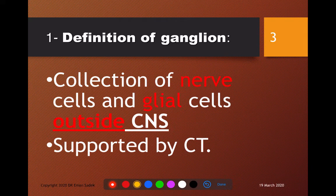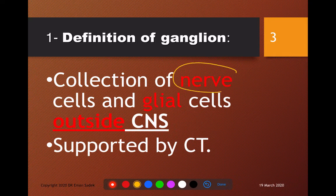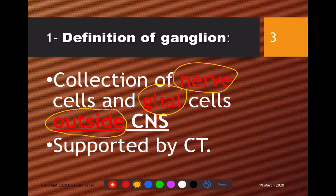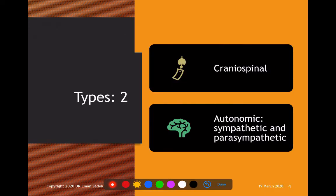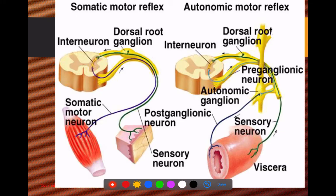First of all, what is a ganglion? A ganglion is a collection of two components outside the CNS — nervous cells and glial cells — supported by connective tissue. We have two types of ganglia: those present along the cranial and spinal nerves, called cranio-spinal ganglia, and autonomic ganglia, which include sympathetic and parasympathetic ganglia.